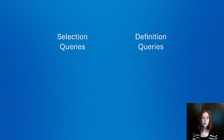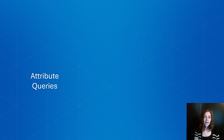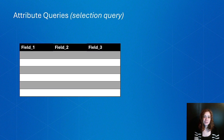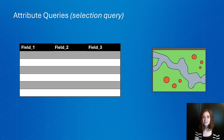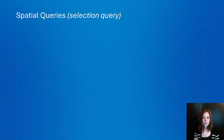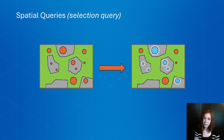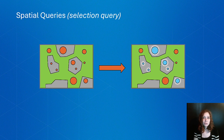We have selection queries and definition queries. There are two types of selection queries: attribute queries and spatial queries. Attribute queries are used to select features within your attribute table, and these queries can be singular or multiple clauses. Spatial queries are used to select data based off of their spatial relationship to other layers. When these selection queries are applied, all features remain in view, but when using a geoprocessing tool, you can choose to only use the subset of selected information.